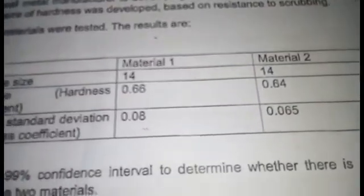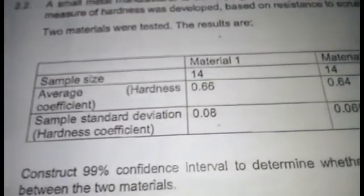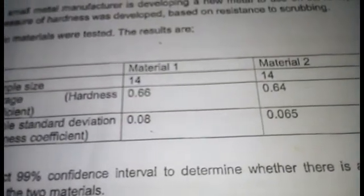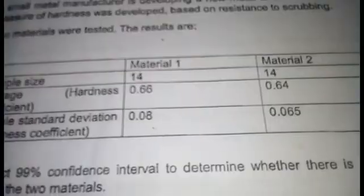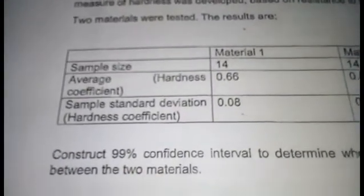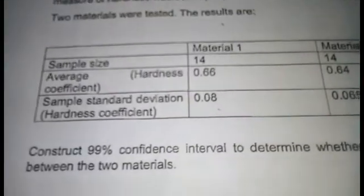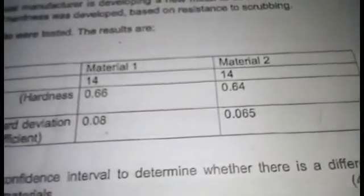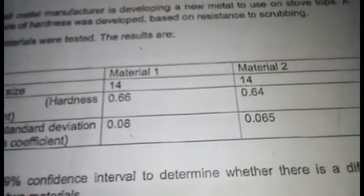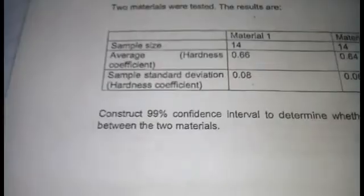The results are: sample size for material 1 is 14, and sample size for material 2 is also 14. The average for material 1 is 0.66, and the average for material 2 is 0.64. The sample standard deviation for material 1 is 0.08, and for material 2 is 0.065.